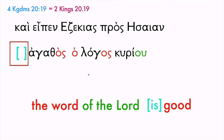A simplistic way to think of it, for the sake of learning to translate: right where that gap is in Greek, we insert the verb 'to be' in English. So here we have 'the word of the Lord' and we have 'good,' and because there's no 'the' with 'good,' we add the verb 'to be' in English — because this is Greek's way of showing that 'agathos' is a predicate, and in English most of the time when we have a predicate, we use the verb 'to be.' So: Hezekiah said to Isaiah, 'The word of the Lord is good.'